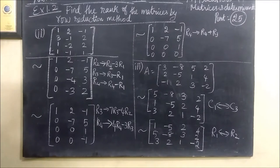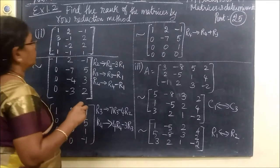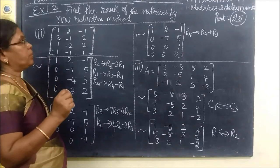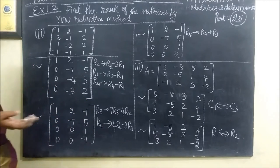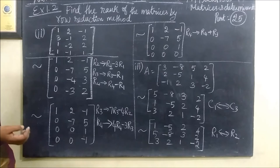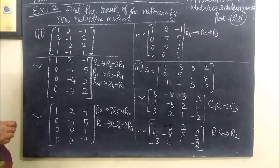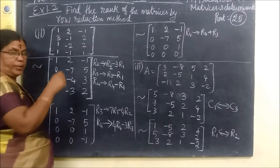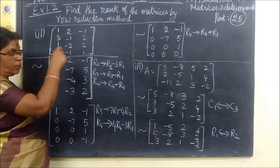This is Part 25, Exercise 1.2. Find the rank of the matrices by the row-reduction method. The row-reduction method is equal to the row equivalent form.